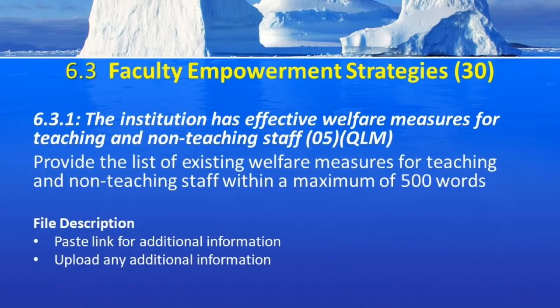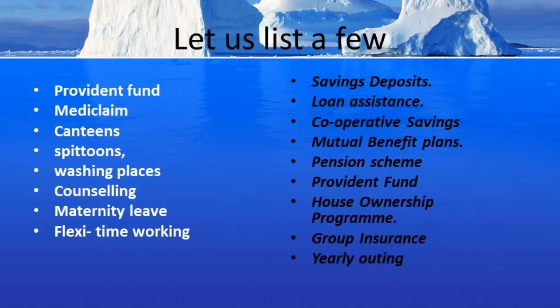The first metric is 6.3.1 — the institution has effective welfare measures for the teaching and non-teaching staff. Here it is expected that a list of welfare measures is to be given; it can be a long list and is to be described in 500 words. Some of the welfare measures can be classified — for example: provident fund, savings deposit scheme, mediclaim, loan assistance, canteens, cooperative savings.